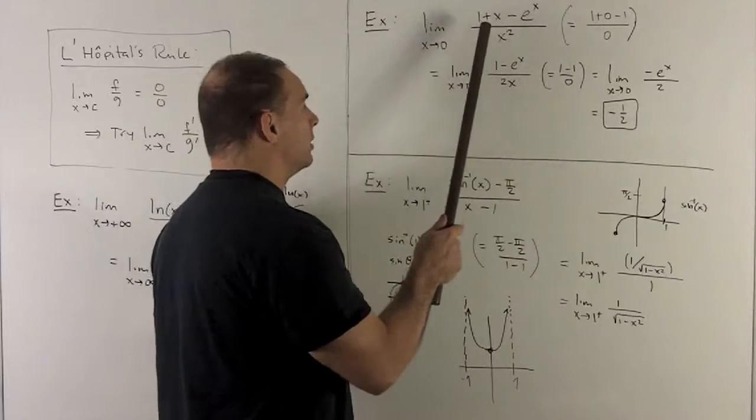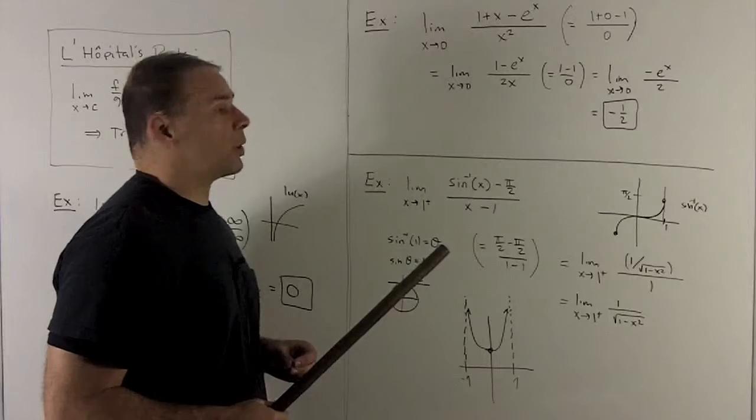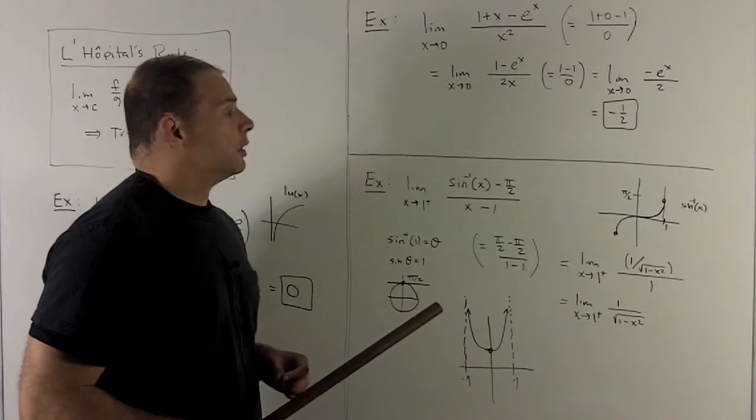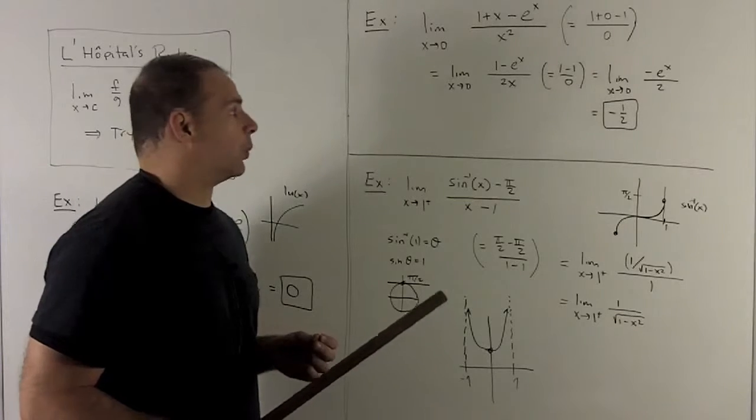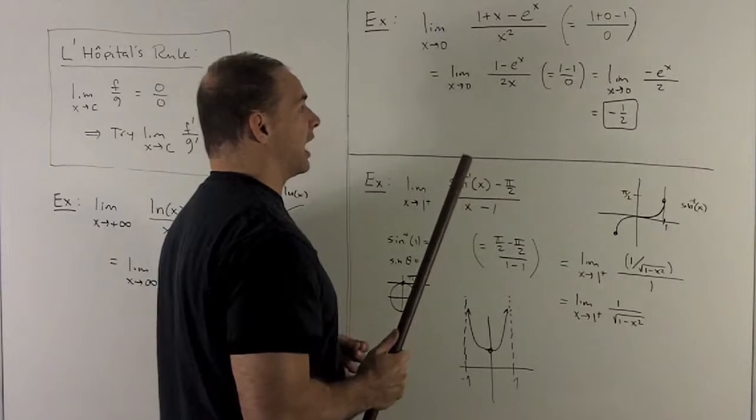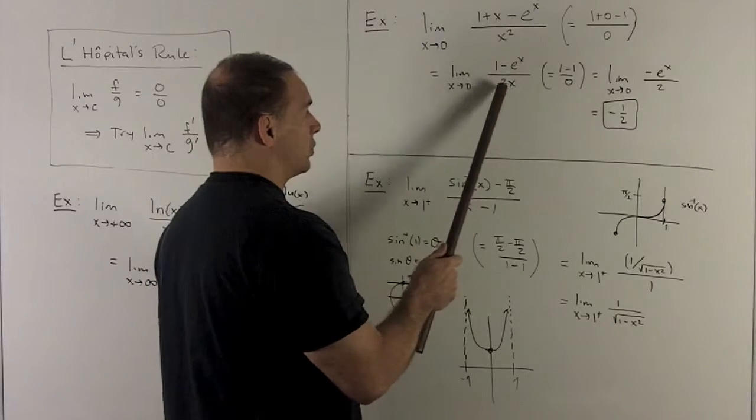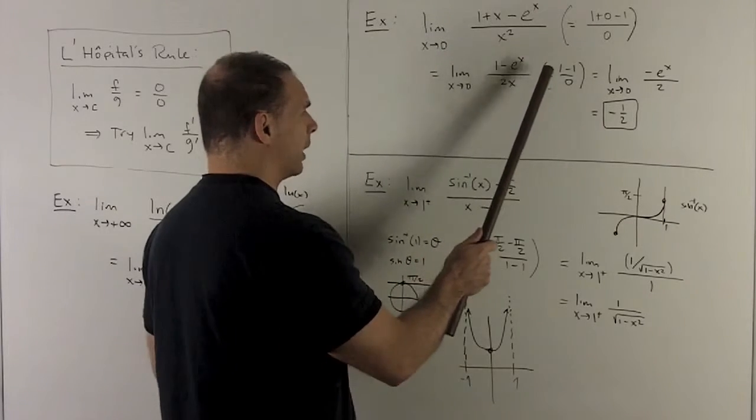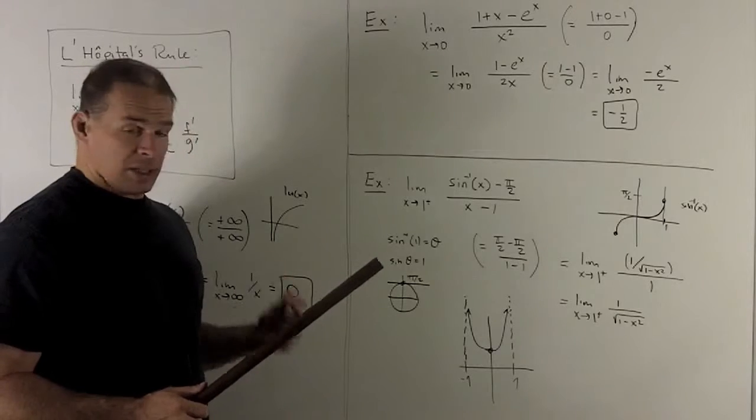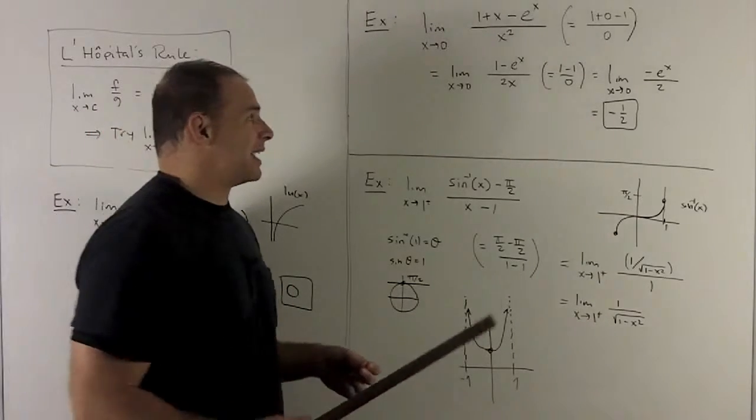I put my 0 in. I get 1 plus 0 minus e to the 0. e to the 0 is 1, so we have 0 on top. 0 on the bottom gives me 0 out. So we can try L'Hôpital's rule. Take the derivative of the top: 1 minus e to the x. And the bottom is 2x. We put 0 in, we get 1 minus 1 over 0. Again, it's an indeterminate form, but L'Hôpital's rule now applies to this one.